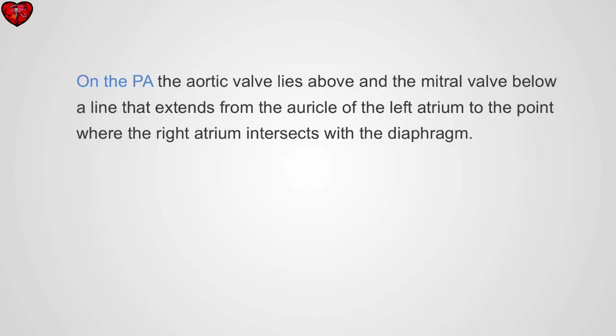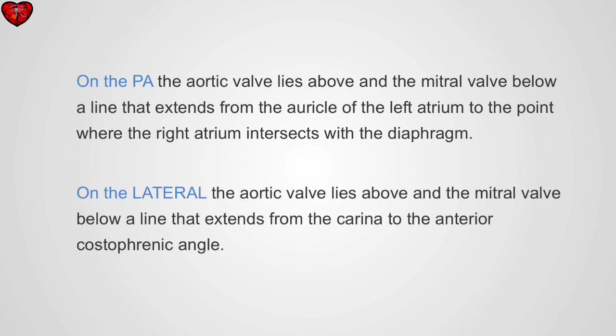In summary, on the PA examination, the aortic valve lies above and the mitral valve below a line that extends from the auricle of the left atrium to the point where the right atrium intersects with the diaphragm. On the lateral, the aortic valve lies above and the mitral valve below a line that extends from the carina to the anterior cardiophrenic angle. Thank you.